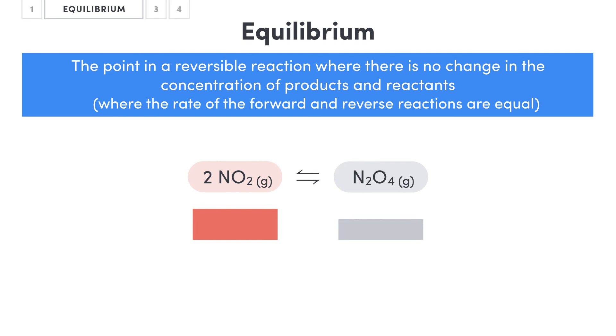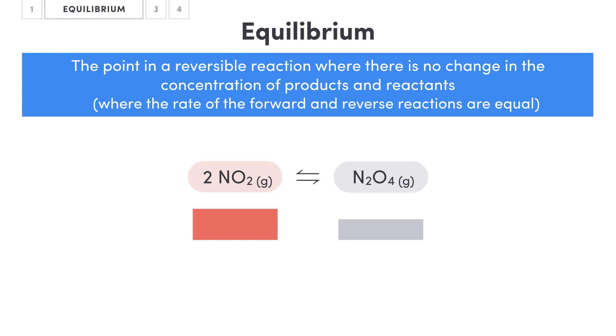So we now understand that some reactions are reversible, they proceed in both directions as indicated by the twin arrows, and we also know that these reactions eventually reach an equilibrium where there is no longer a change in the concentration of products and reactants, or where the rate of the forward and reverse reactions are equal.